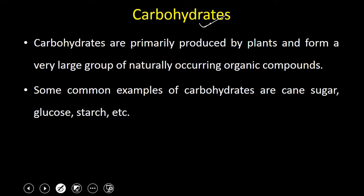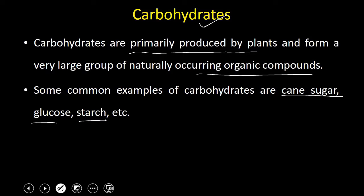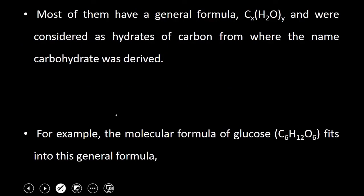Carbohydrates, as you must be knowing, are primarily produced by plants and they form a very large group of naturally occurring organic compounds. You have heard about various carbohydrates like cane sugar — cane sugar consists of sucrose, which is a very important carbohydrate — glucose, starch, etc. These are some common examples of carbohydrates. Another very important property is that most of them have the general formula CX(H2O)Y.